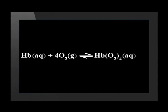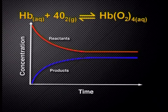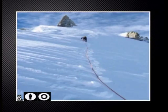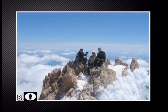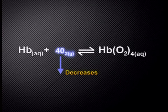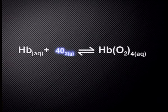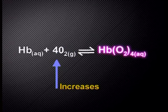The equation for the reaction is: hemoglobin (Hb) reacts with oxygen to form oxyhemoglobin. In normal conditions, the concentration of reactants and products stays constant. But when mountain climbers reach high altitudes, the concentration of oxygen in the air decreases drastically. The oxygen in their lungs decreases, the reaction is no longer in equilibrium, and the reverse reaction increases its rate to produce more oxygen.